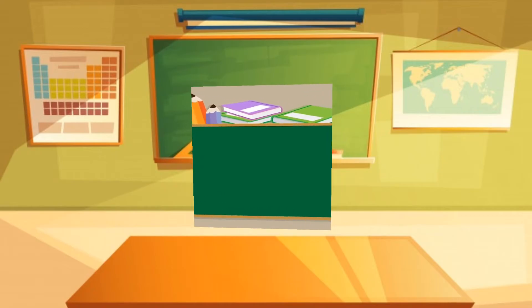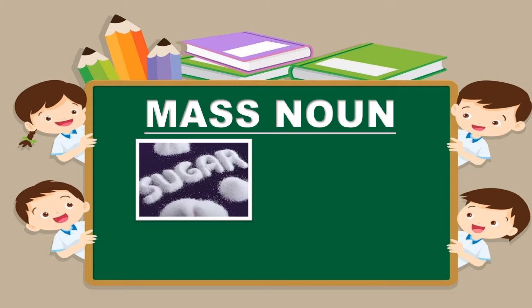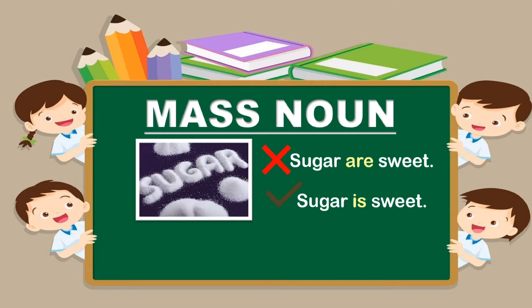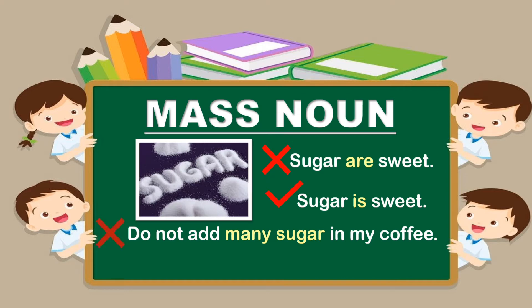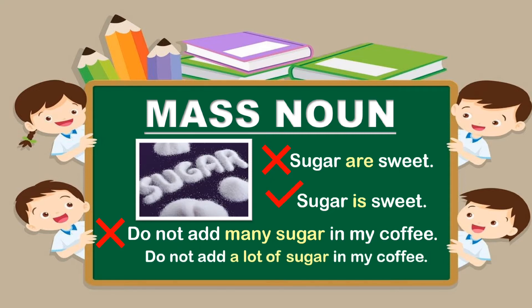I have a little trivia for you. Did you know that sugar is an example of a mass noun? Mass nouns are nouns that you cannot count — you just cannot count the sugar particles one by one, that would take ages. Because sugar is a mass noun, it takes a singular subject. So instead of saying 'Sugar are sweet,' which is wrong, you say 'Sugar is sweet.' And instead of saying 'Do not add many sugar in my coffee,' you say 'Do not add a lot of sugar in my coffee.' This coffee is an example of a mixture, and in this case, it is called a homogeneous mixture.